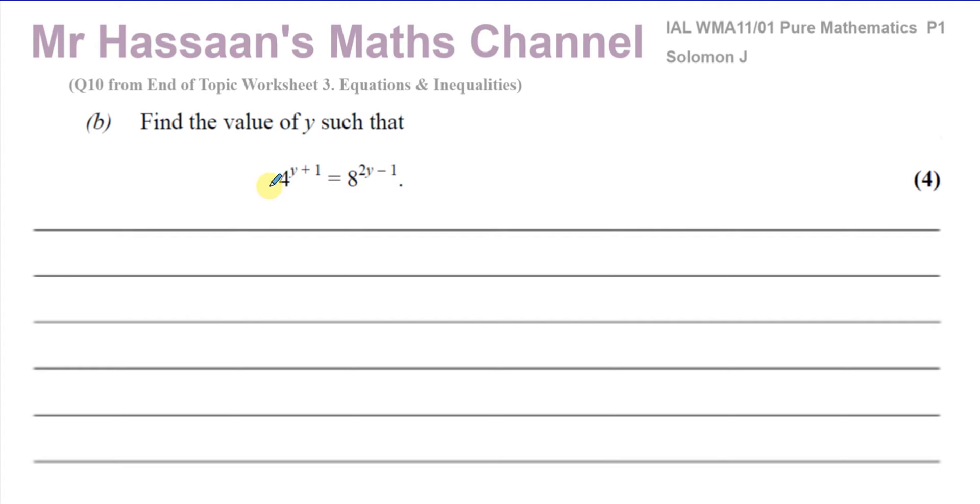You're never given ones which cannot be expressed with the same base in P1. In P2 that's a different matter, we use a different method called logarithms when we have bases that cannot be expressed as the same and we resort to logarithms. We're going to deal with in P2, but in P1 you'll always find that you'll have the bases that can be expressed as the same number.